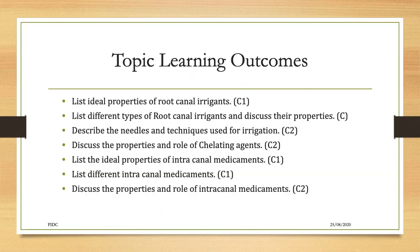Coming to the topic learning outcomes: list ideal properties of root canal irrigants; list different types of root canal irrigants and discuss their properties; describe the needles and techniques used for irrigation; discuss the properties and role of chelating agents; list the ideal properties of intracanal medicaments; list different intracanal medicaments; and discuss the properties and role of intracanal medicaments.